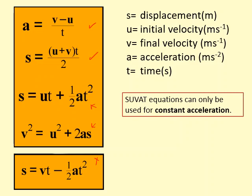If an object is moving at constant speed or constant velocity, you can just use the simple V equals S over T equation. If the acceleration is changing, you shouldn't be using the SUVAT equations.